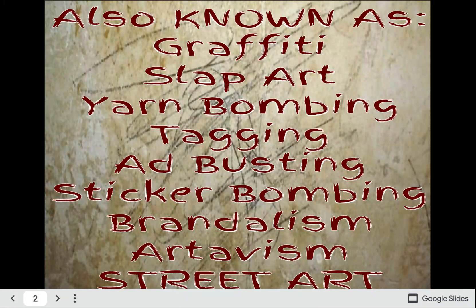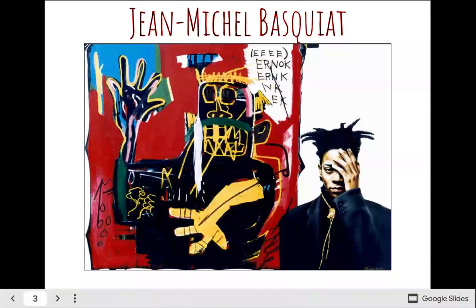Do you guys remember last year or the year before, on the back wall, when we did the rhombus designs from the artist Thank You X? It's behind you — we made the cubes; that artist is Thank You X, but that is not his real name. I actually met him on a corner in Chicago, which was really cool. This is Jean-Michel Basquiat — I've talked about him a couple of times. He's considered one of the main graffiti artists in the U.S. He's French, but he was in Philly and he's the one who originally started painting underneath underpasses.